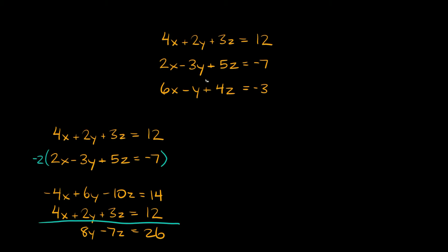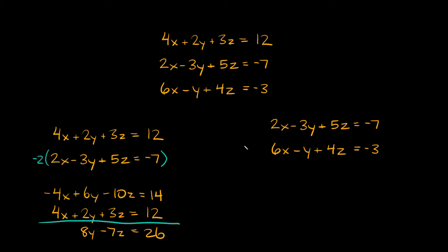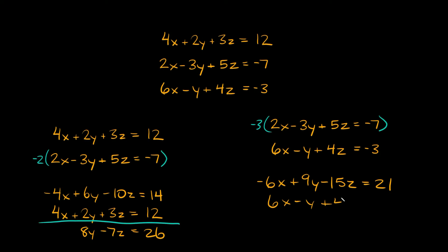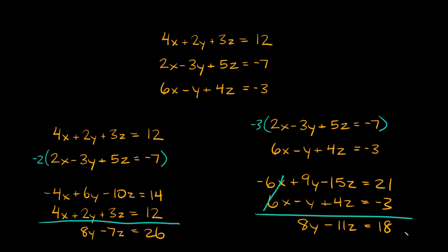We're going to use equations 2 and 3, and we want to eliminate the same variable again — x. To do that, we multiply equation 2 by negative 3, so we'll have negative 6x up top since we have a positive 6x. Multiplying by negative 3 gives us negative 6x plus 9y minus 15z equals positive 21. Then bringing down equation 3: 6x minus y plus 4z equals negative 3. Adding these two together, negative 6x plus 6x is eliminated. 9 minus 1 equals 8y. Negative 15 plus 4 equals negative 11z, and that equals positive 18.